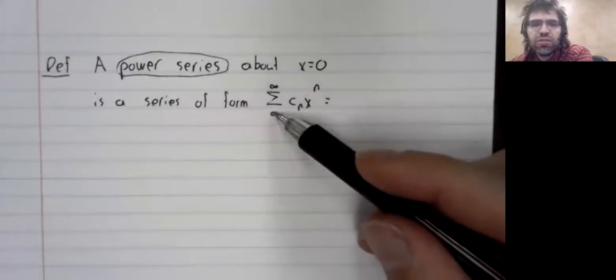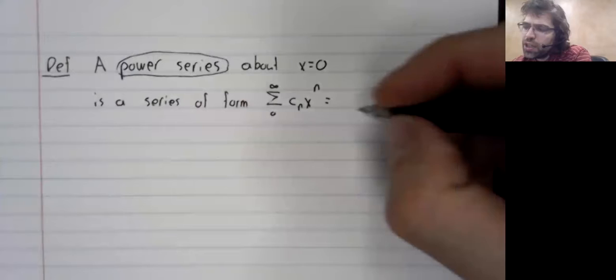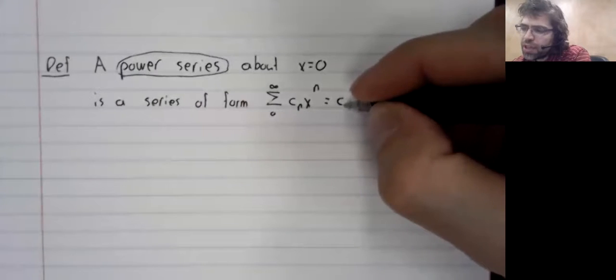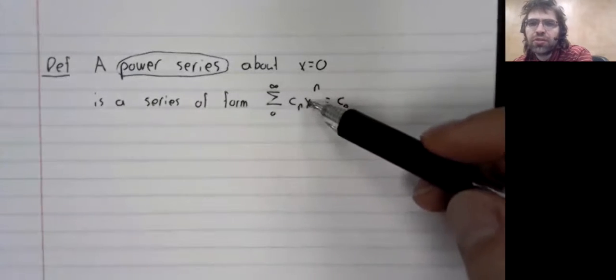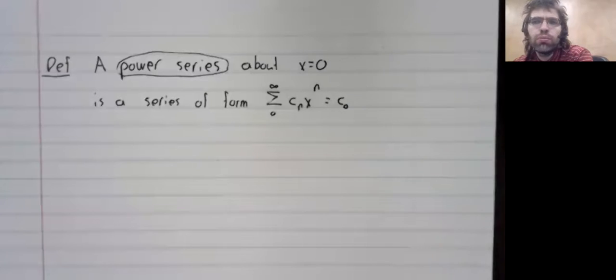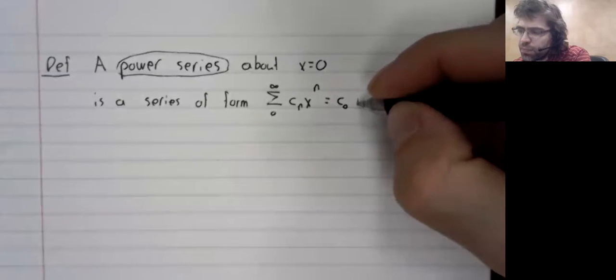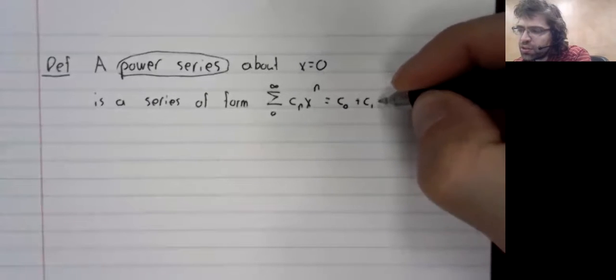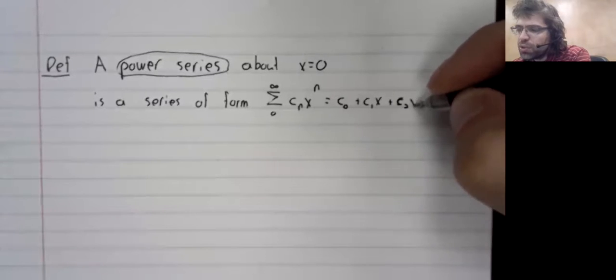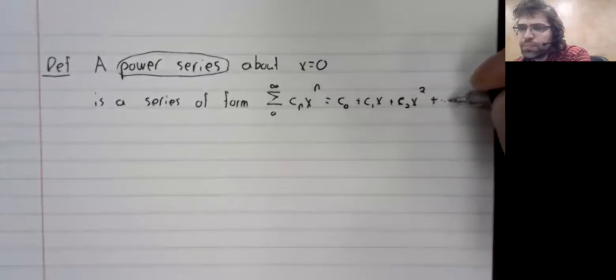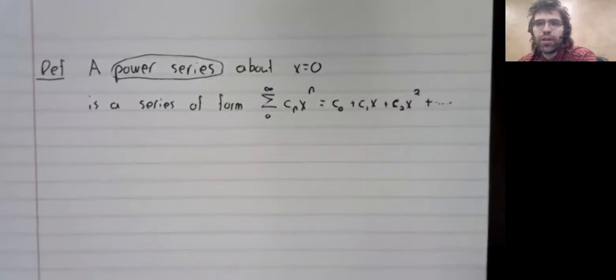You'll notice we start from zero here. That's to give us a constant term. x to the power of zero is one. Then after that, c sub one x plus c sub two x squared and so on into infinity.